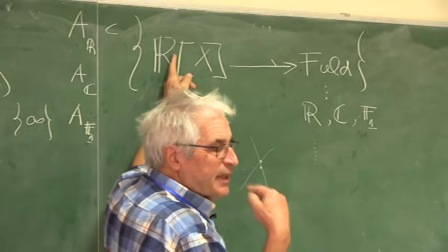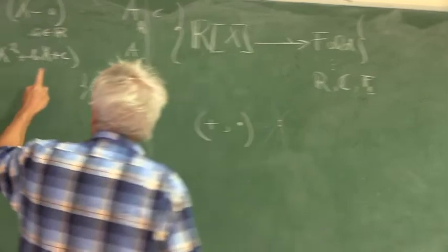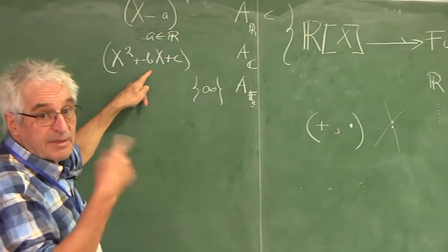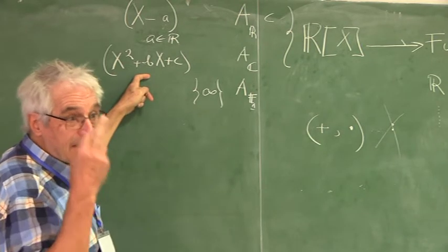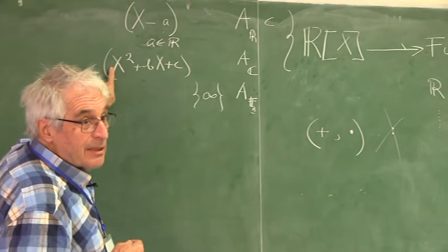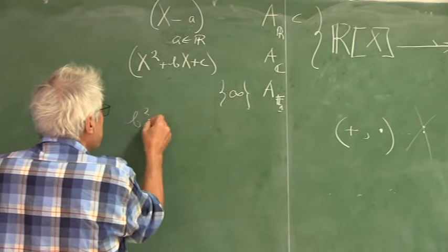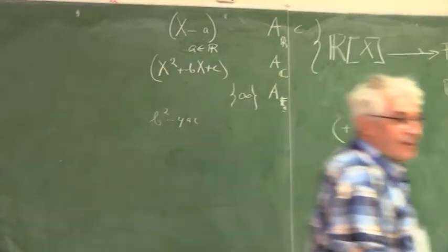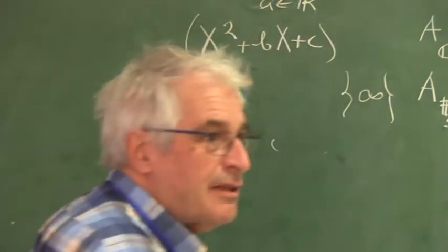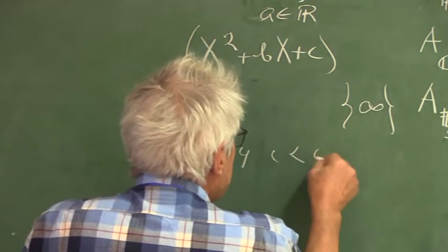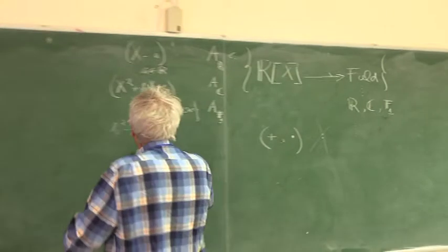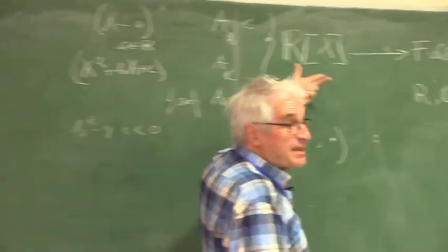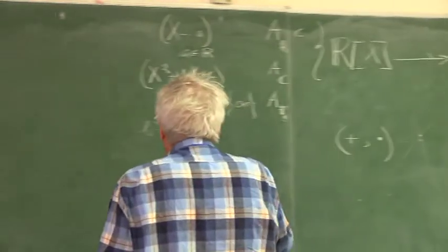We must be careful: the ideal generator should generate a prime ideal. A prime ideal means this polynomial does not split with real factors. In high school we learned this happens if the discriminant B squared minus 4AC is negative — then it does not split, the image is a field, and it is a copy of the field of complex numbers. So we can almost draw this set.